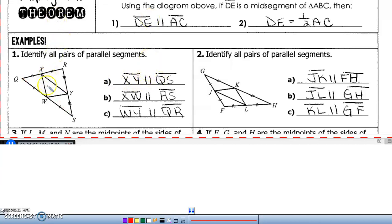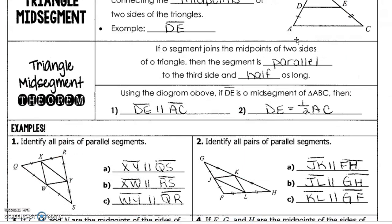Now, let's look at XW, this one right here. It is parallel to its base of RS. And then the third one is WY, it is parallel to its base of QR. Alright, so you're doing the same thing in number two.